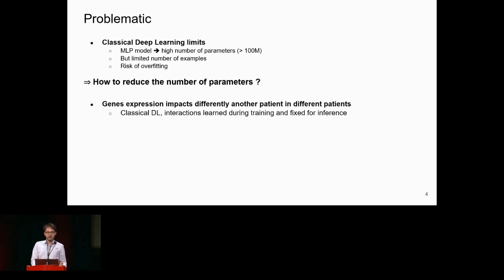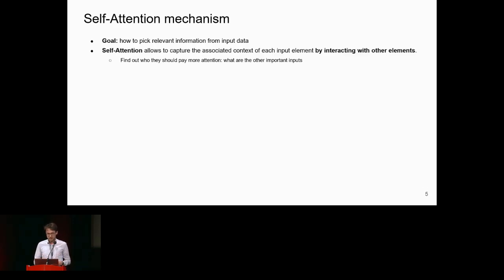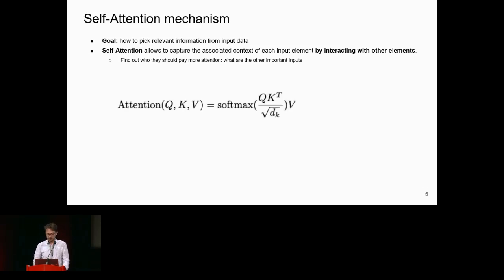Another aspect is that between two patients, genes will not be expressed in the same way — there are differences in how genes interact and their expression levels. With classical deep learning, these interactions are fixed by learning during training and remain fixed for inference. But for truly personalized medicine, we need interactions specific to each patient. This is possible with the attention mechanism, which picks relevant information from the input data by letting input elements interact with each other.